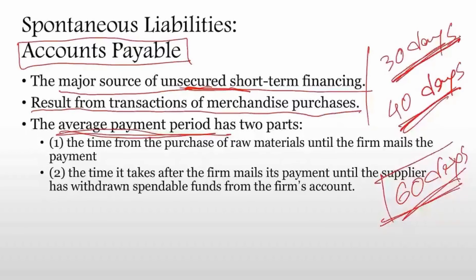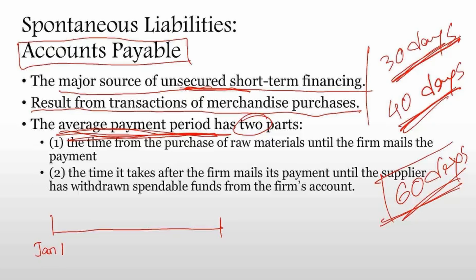How many days you can finance depends on the average payment period — how many days you take to pay your supplier. It has two parts. The first part is the time from the purchase of raw material until the firm mails the payment. For example, we purchase on January 1 and we send the check on January 15, so 15 days is the first part of the average payment period.